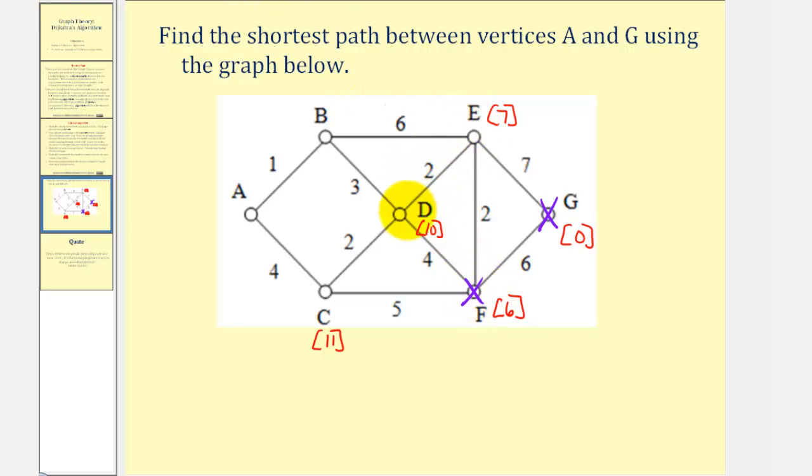So looking at vertex E, D, and C, since E is the least distance from the end, E is now current. And now we'll look at all the vertices leading to E, which should be B and D, because we already visited F.